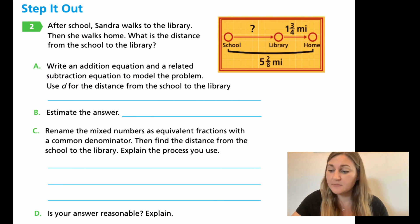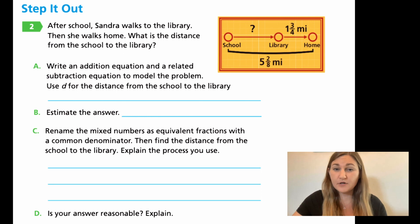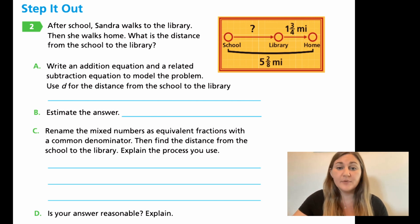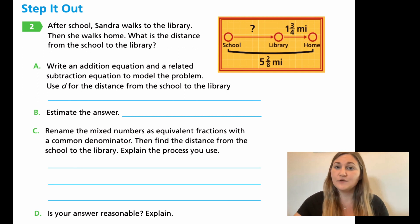For C, rename the mixed numbers as equivalent fractions with a common denominator, then find the distance from school to the library. Remember, when it says rename, you'll need to change that mixed number so it works with your subtraction problem. For D, is your answer reasonable — is your final answer close enough to your estimate? If not, try it again before you push play. Go ahead and pause and try these problems now.